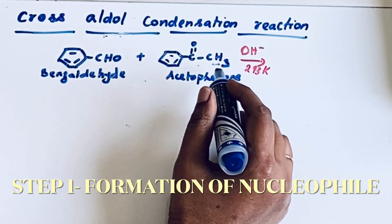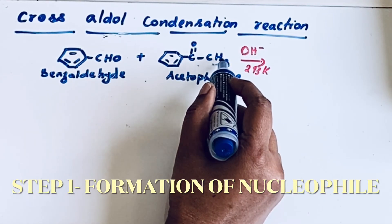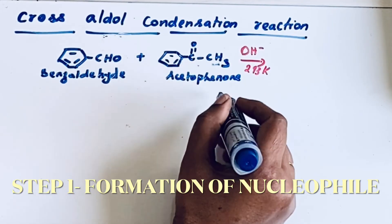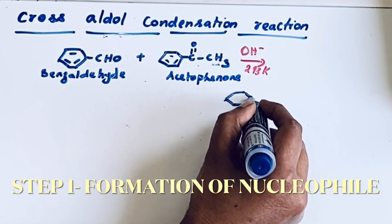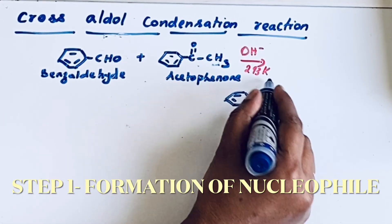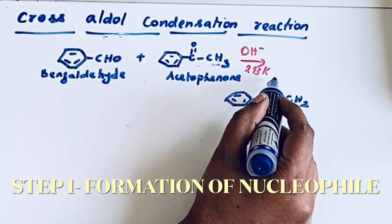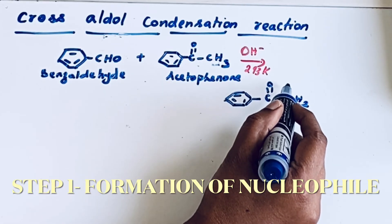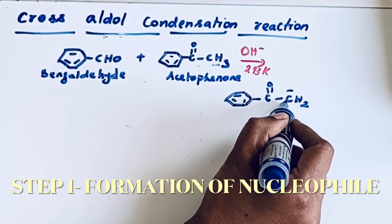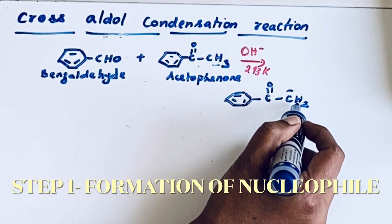So the first step in cross aldol condensation is the formation of a nucleophile. The alpha hydrogen reacts with the base, resulting in the formation of a nucleophile — that means removal of one alpha hydrogen from C double bond O CH2. Whenever that alpha hydrogen leaves, it leaves its electrons on that carbon, so this carbon becomes electron rich and behaves like a nucleophile.